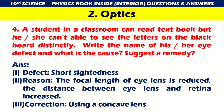A student in a classroom can read a textbook but cannot read the letters on the blackboard. Name his eye defect and its cause. The defect is short-sightedness. The reason is that the focal length of the eye lens is reduced and the distance between the eye lens and retina is increased. Correction: using a concave lens.